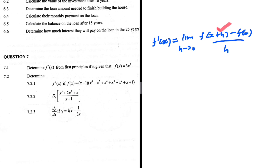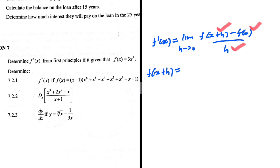Here we're substituting x plus h in place of x, and then subtracting f of x, dividing by h. Let's work out the numerator first. In the numerator we have f of x plus h, so let's see what happens. f of x is 3x squared.